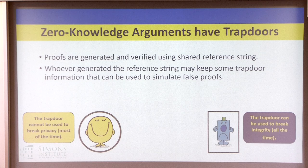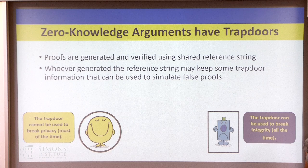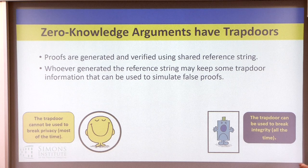The problem with SNARKs is that they have to have a trusted setup. Zero knowledge necessarily, by definition, has a trapdoor. In any construction you care to mention, there will exist some trapdoor which can be used to forge proofs. It cannot be used to break anonymity, but it can be used to break integrity — soundness — all of the time.